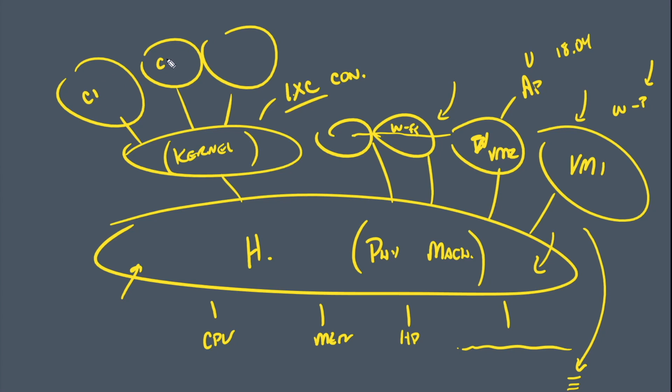These little blobs, we'll just call it container one, container two, container three, that share the same Linux kernel. This gives you even more efficiencies over the virtual machine world because you've gone yet another layer.